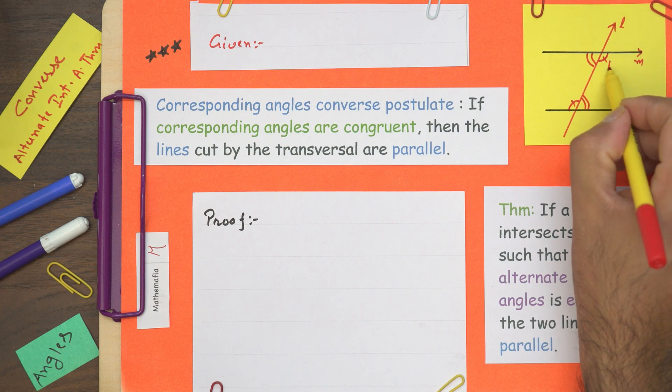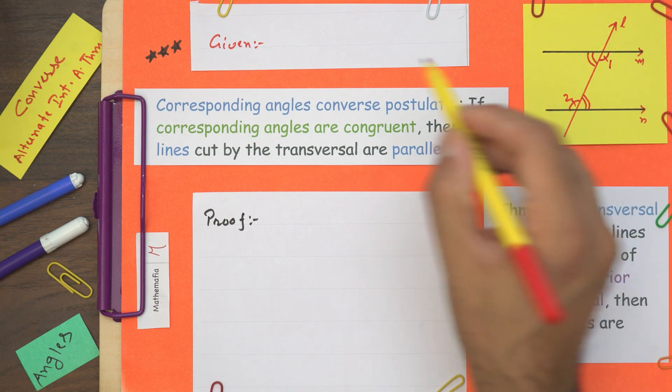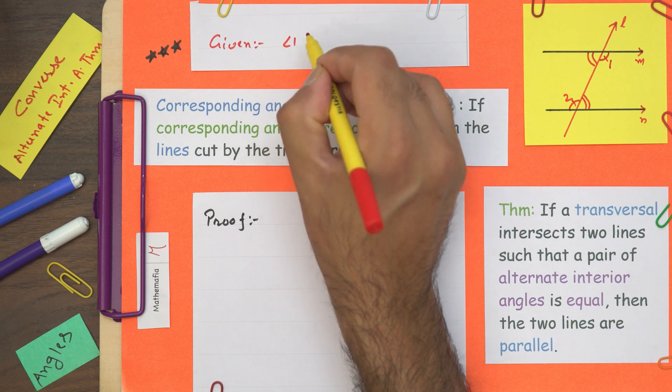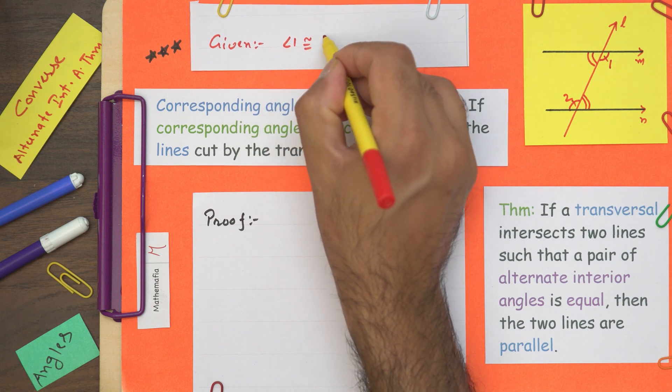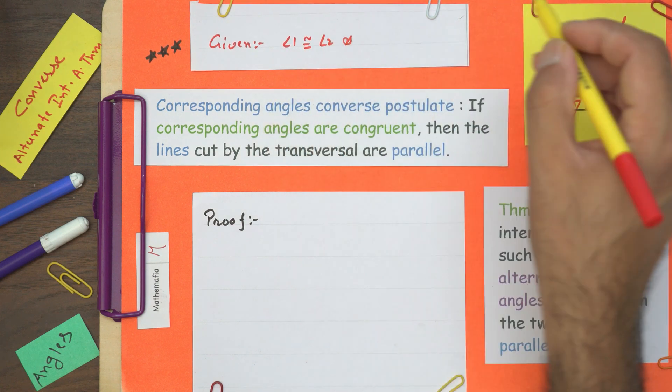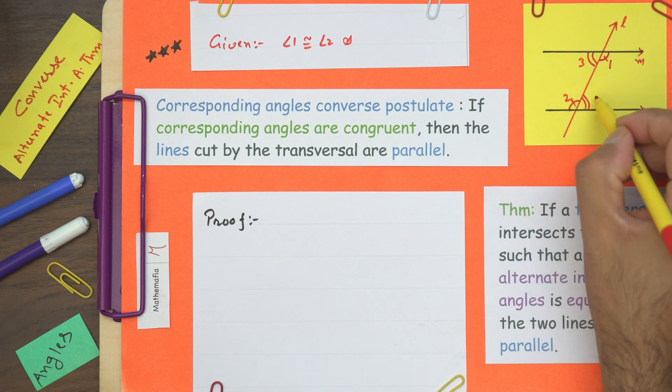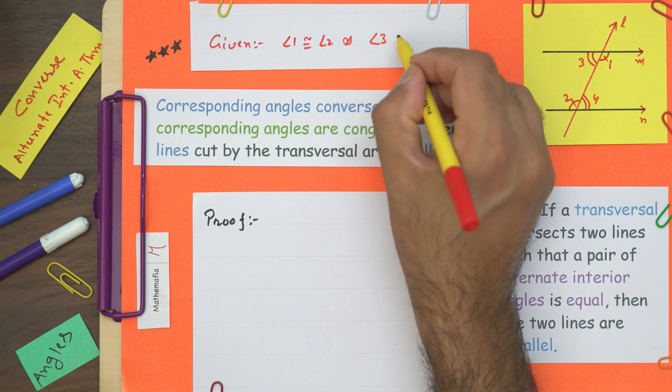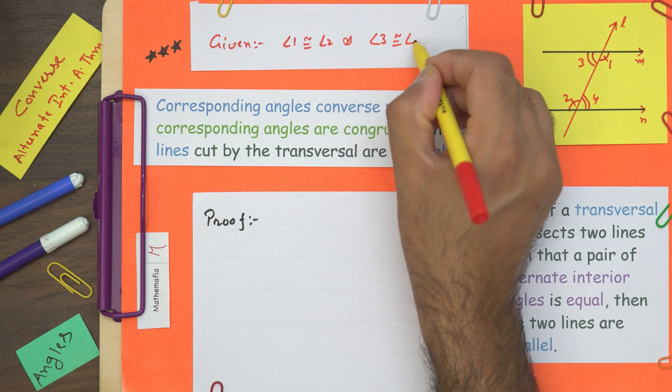Given: If I call this angle 1 and this angle 2, then we are given that angle 1 is congruent to angle 2. And if I call this angle 3 and this angle 4, then angle 3 is congruent to angle 4. This is given.